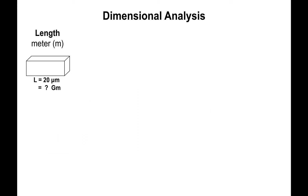Let me give you an example. We have a block that is 20 micrometers in length, and I want to find out what that length is in gigameters. Two things to think about right off the bat: since we're talking about micrometers, we need the conversion between micrometers and meters; and since we're talking about gigameters, we need the conversion between gigameters and meters. Specifically, 1 gigameter equals 10 to the 9 meters, and 10 to the 6 micrometers equals 1 meter.